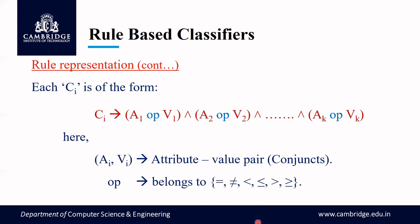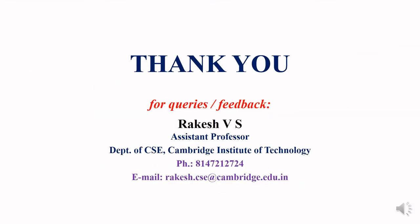Each ci, the condition or antecedent part, is represented as an attribute-value pair — written as (ai operator vi) — where ai is the attribute, vi is the value, and the operator can be equal to, not equal to, less than, less than or equal to, greater than, or greater than or equal to — the relational operators. This is the complete form of a rule: the if part is the rule antecedent containing attribute test conditions, and the then part is the rule consequent containing the class label.